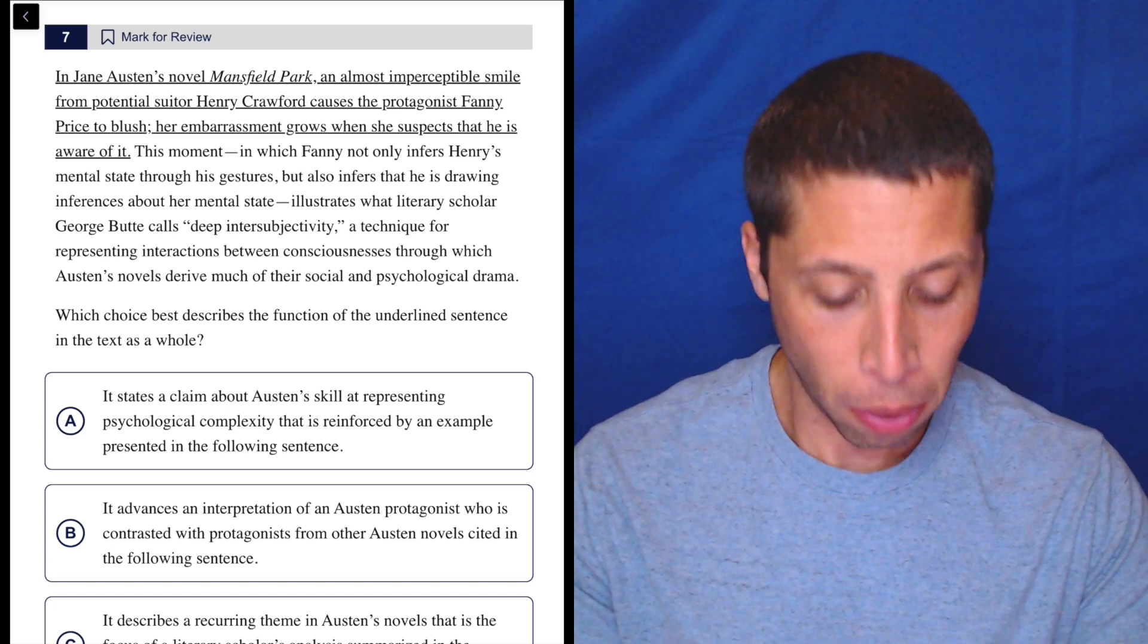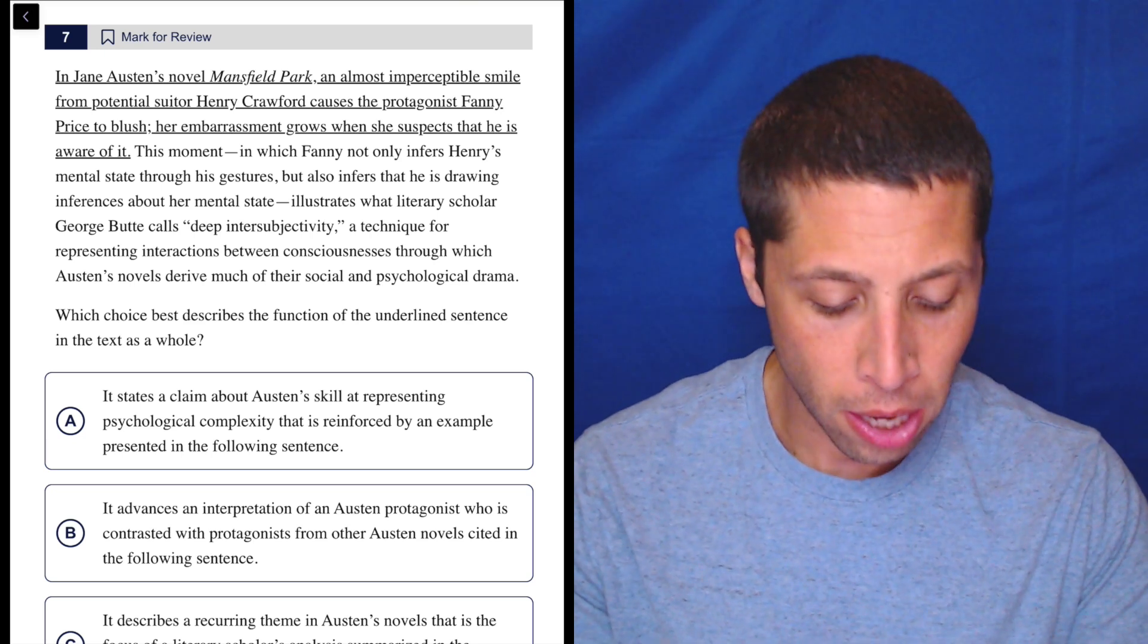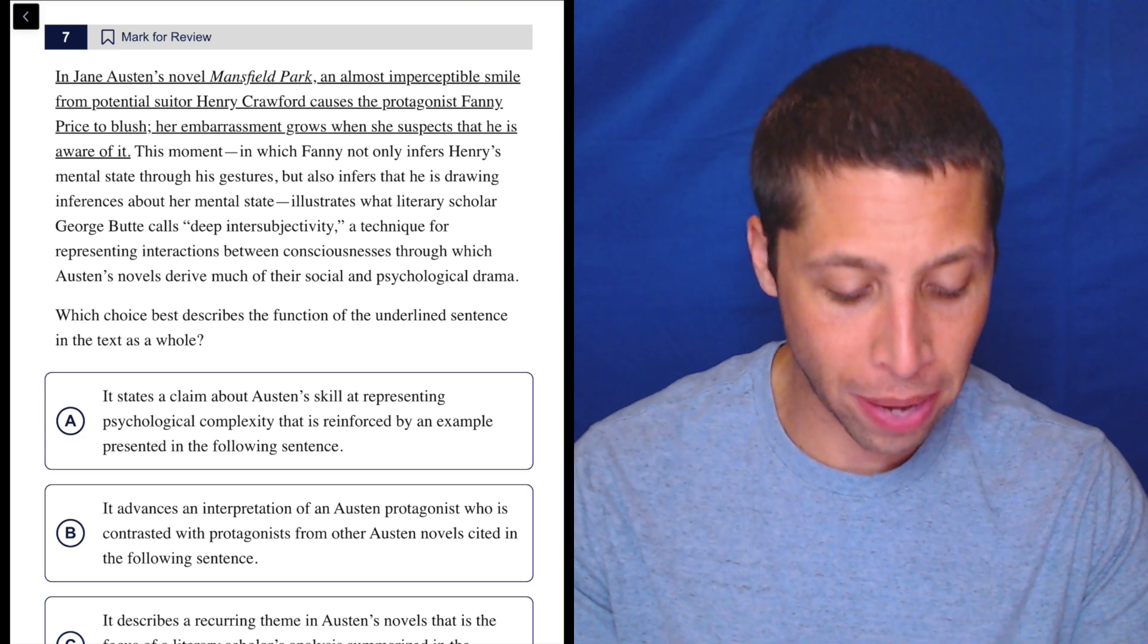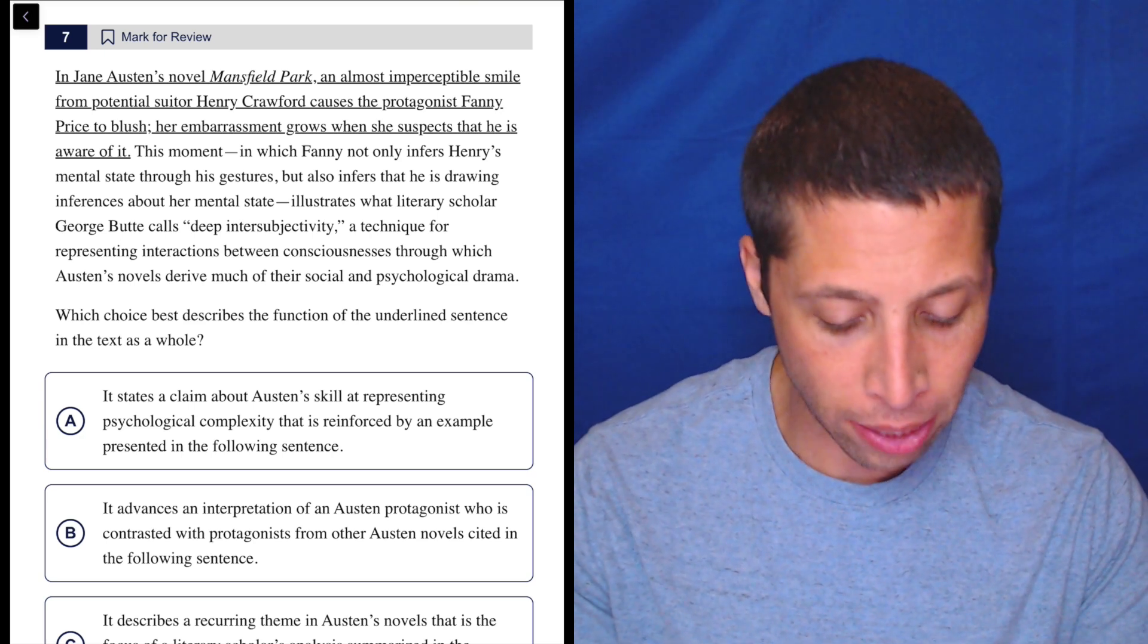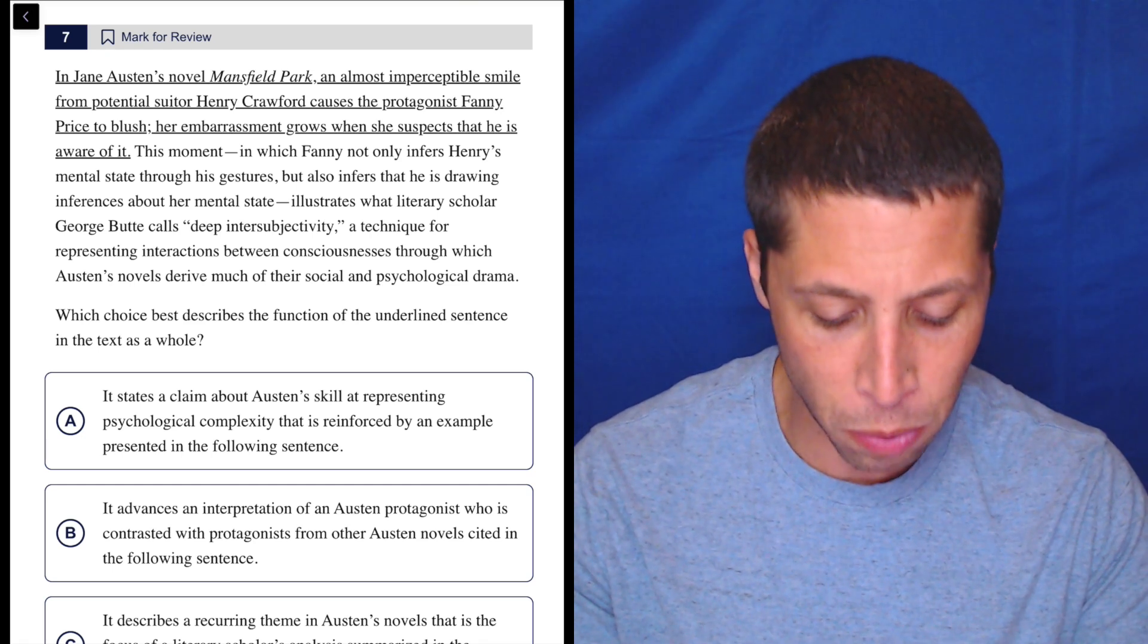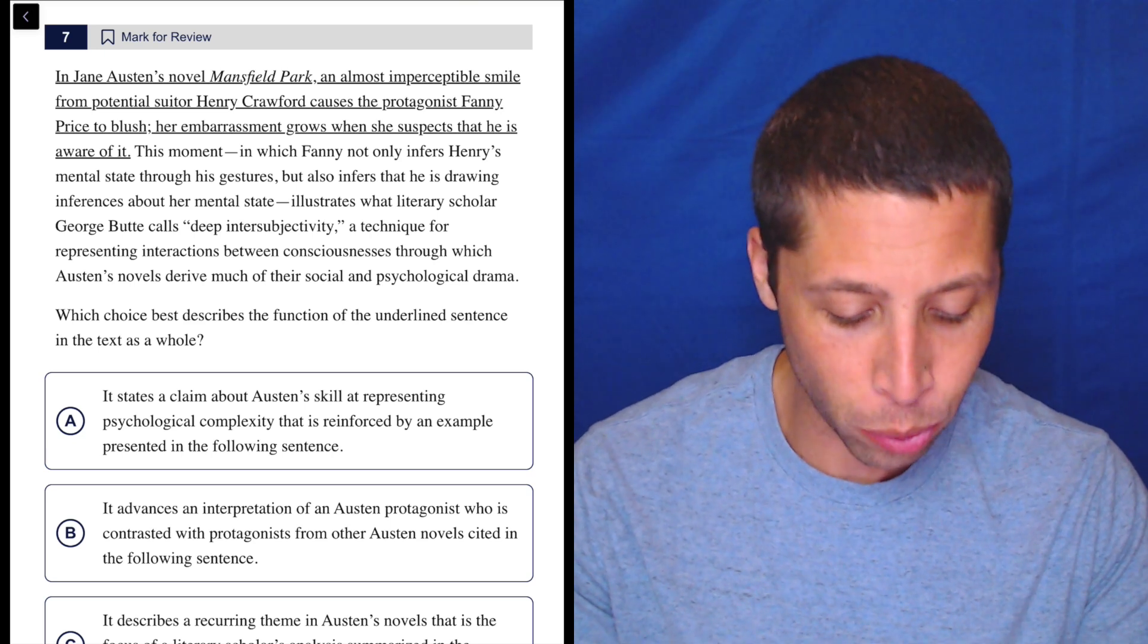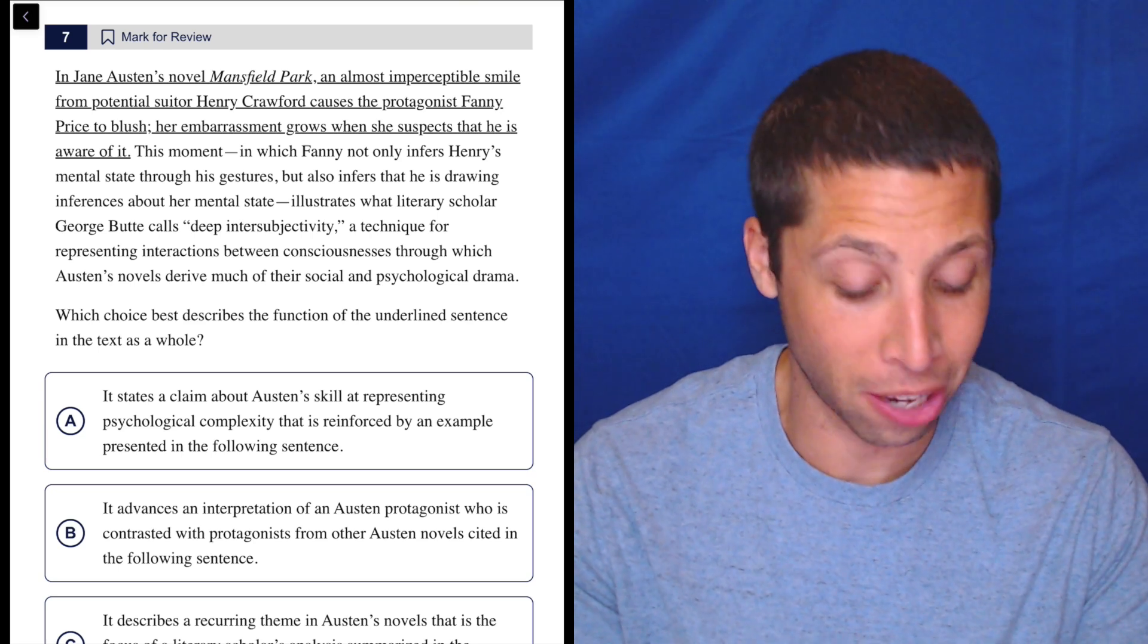In Jane Austen's novel Mansfield Park, an almost imperceptible smile from potential suitor Henry Crawford causes the protagonist Fanny Price to blush. Her embarrassment grows when she suspects that he is aware of it. This moment, in which Fanny not only infers Henry's mental state through his gestures, but also infers that he is drawing inferences about her mental state, illustrates what literary scholar George Butte calls deep intersubjectivity, a technique for representing interactions between consciousness through which Austen's novels derive much of their social and psychological drama.